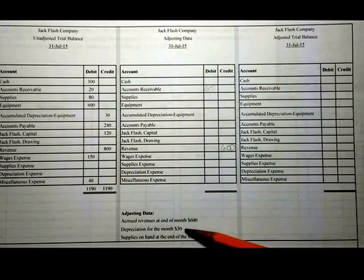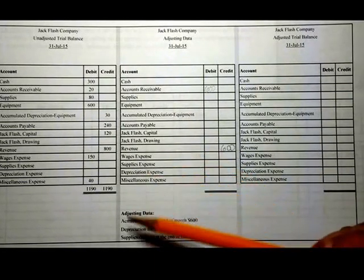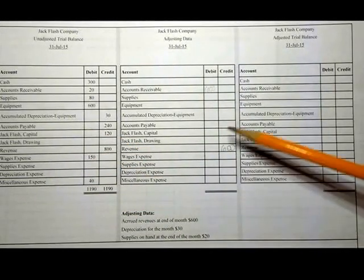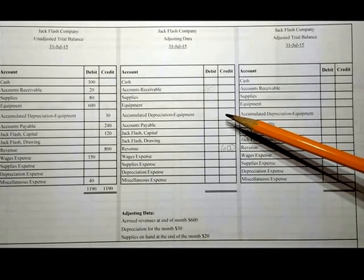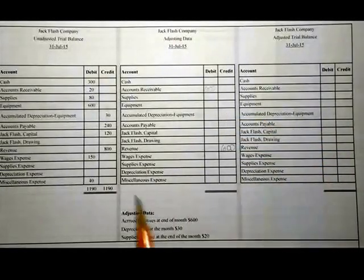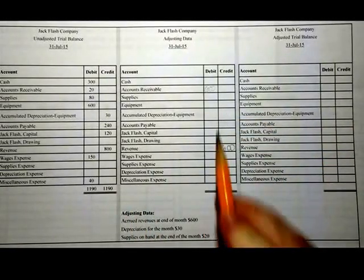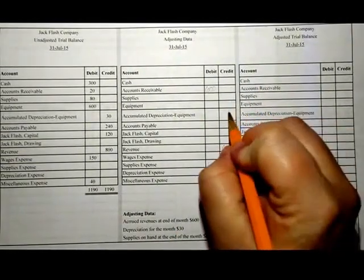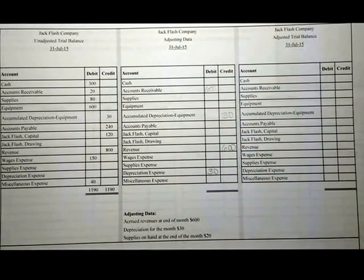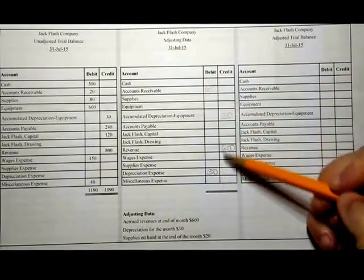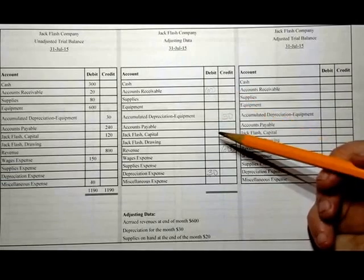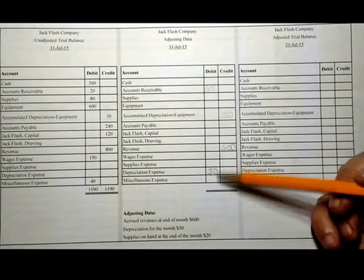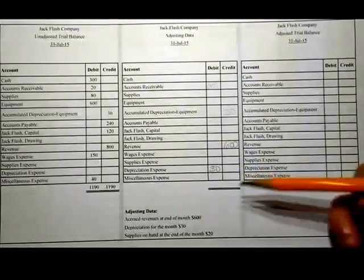Depreciation for the month: $30. Depreciation is recorded by debiting depreciation expense and crediting accumulated depreciation. Depreciation expense is going to be debited for $30 and accumulated depreciation credited for $30. My journal entries here are balanced — $630 in the debit and $630 in the credit.